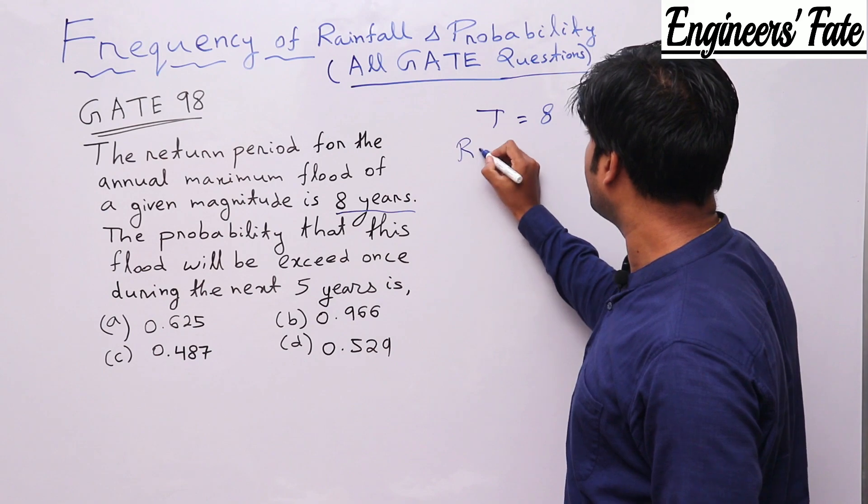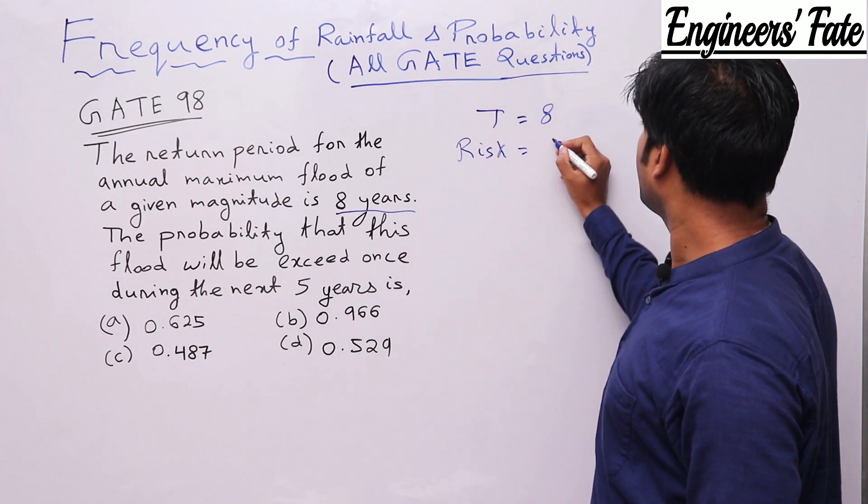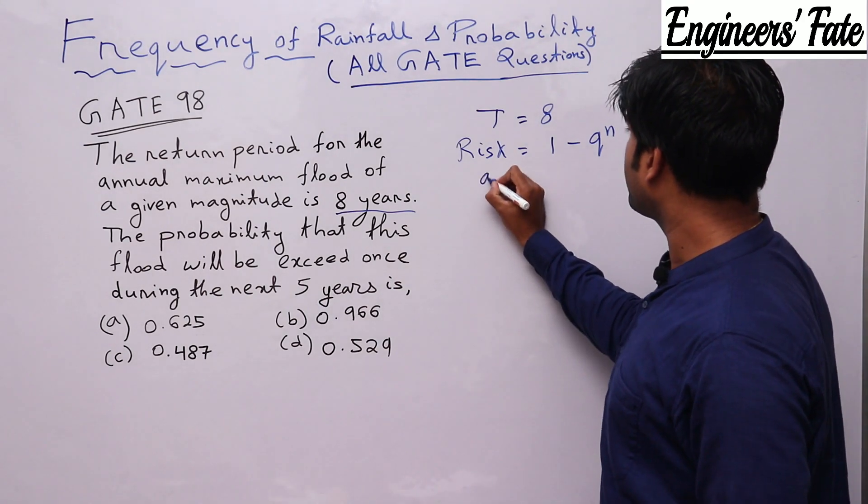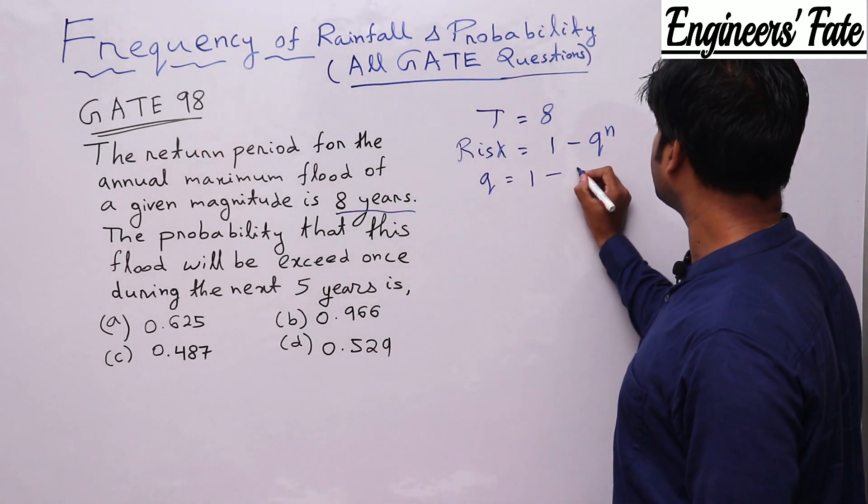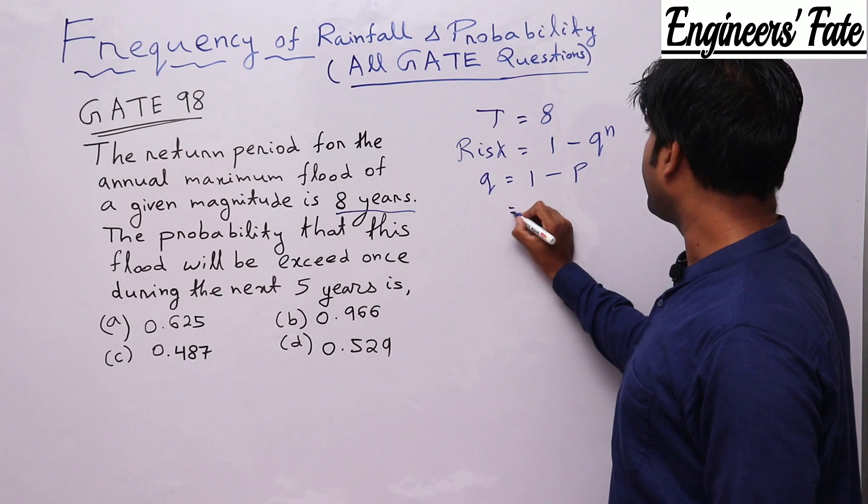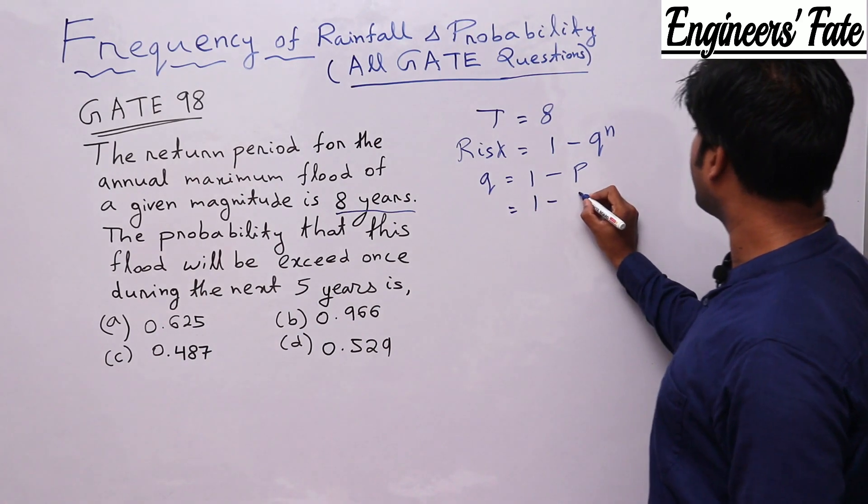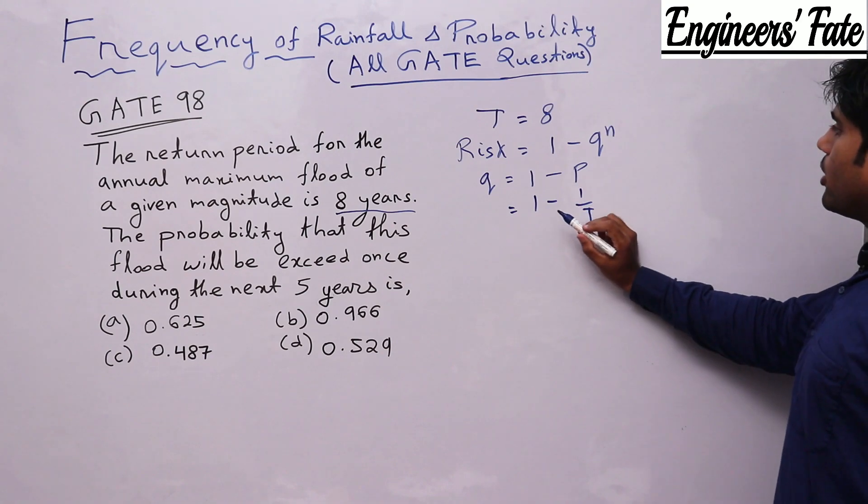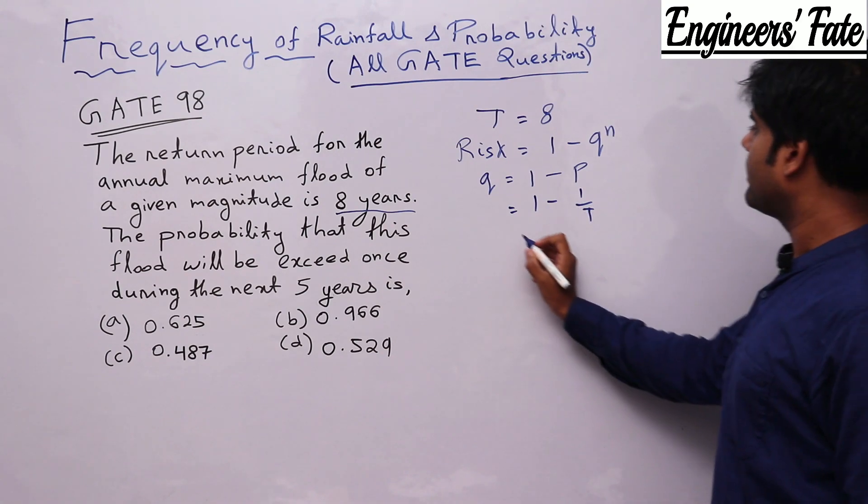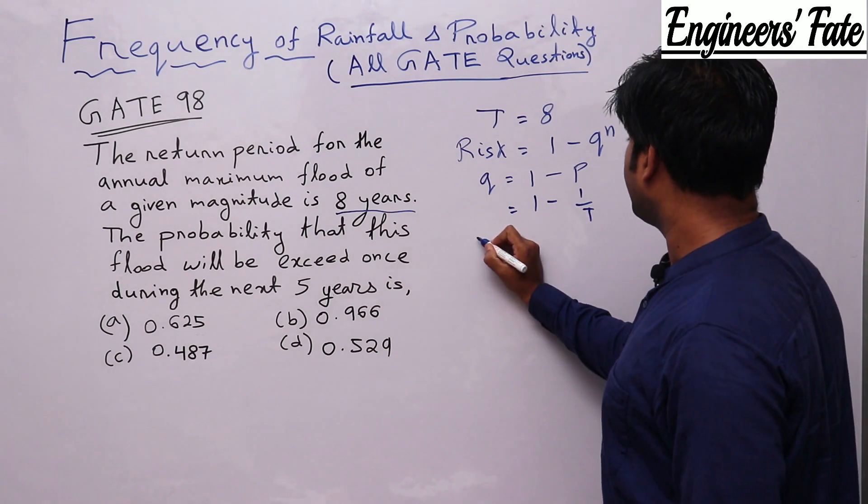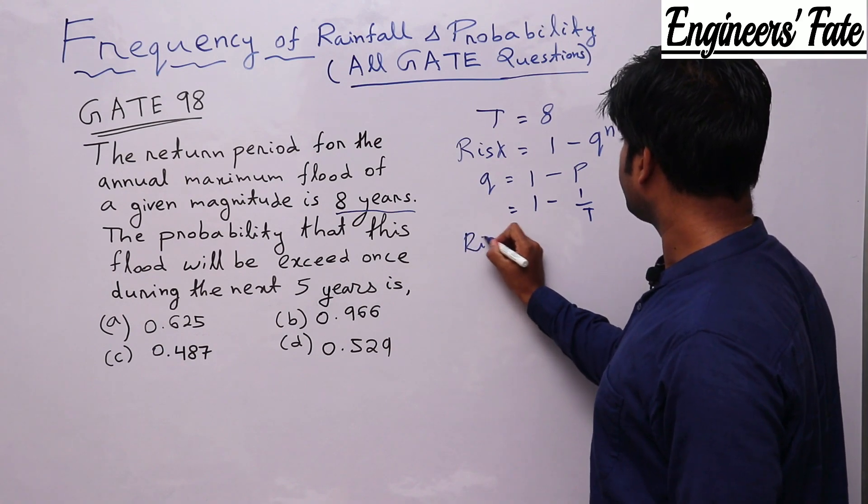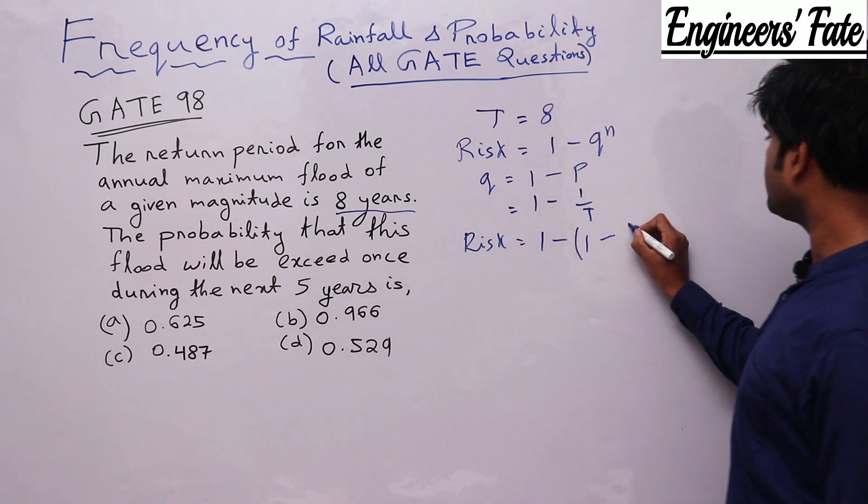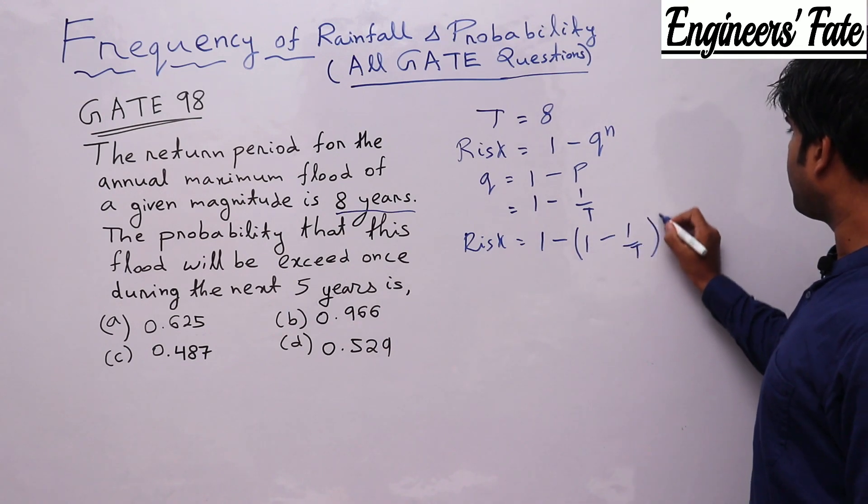And we know that risk equal to 1 minus Q to the power N. So what is Q? Q equal to 1 minus P. What is P? P equal to 1 by T. So Q equal to 1 minus 1 by T. Then what is risk? Risk equal to 1 minus 1 minus 1 by T to the power N.